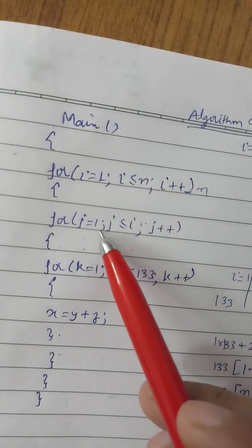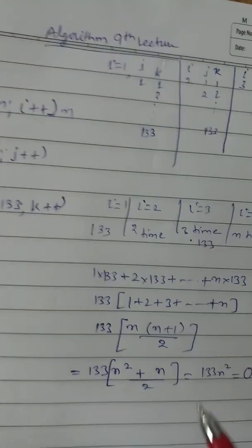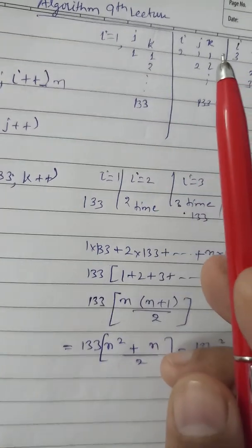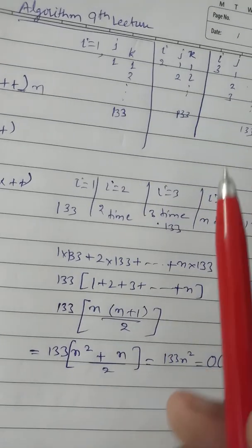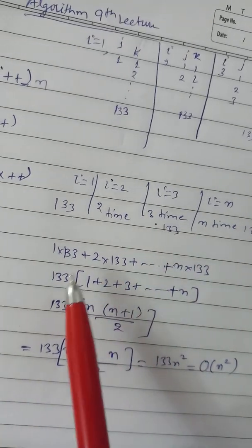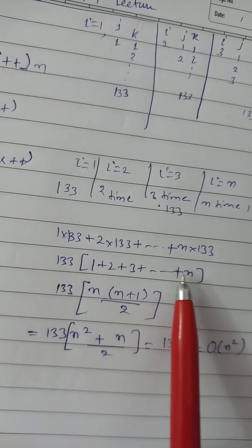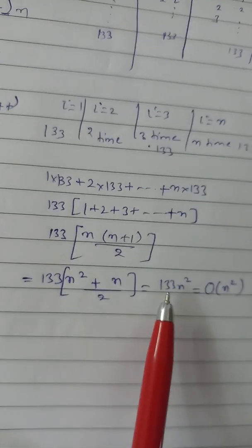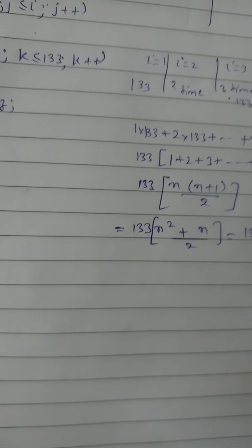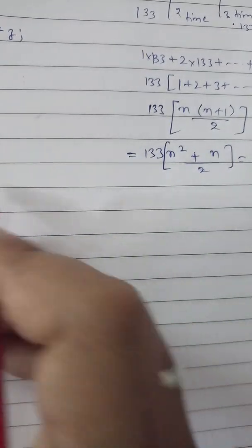To recap: we have a loop for i, another loop for j running up to less than or equals to i, and k from 1 to 133. When i is 1, j runs 1 time, k runs 1 times 133. When i is 2, j runs 2 times, k runs 2 times 133. Similarly for i equals 3, j and k run 3 times 133. So writing 1×133 + 2×133 + ... + n×133, taking 133 common and summing gives O(n²).